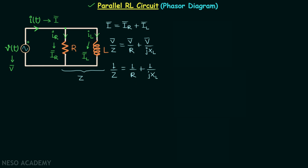When you multiply j in the numerator and j in the denominator, you will have negative j multiplied by 1 over XL. So we have 1 over Z equal to 1 over R minus j times 1 over XL.